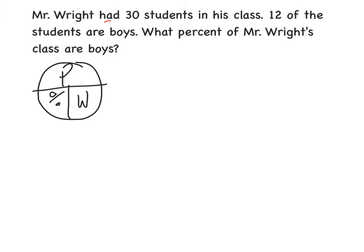Mr. Wright had 30 students, that's a whole, and 12 of the students were boys, which is a part. Now we need to put these numbers into the scenario. My part would go on top, just like it is in the circle, and the whole would go on bottom.